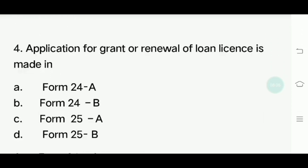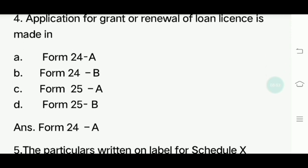Fourth question: Applications for grant or renewal of loan license - which form is used? Options: Form 24A, Form 24B, Form 25A, Form 25B. Answer is Form 24A.